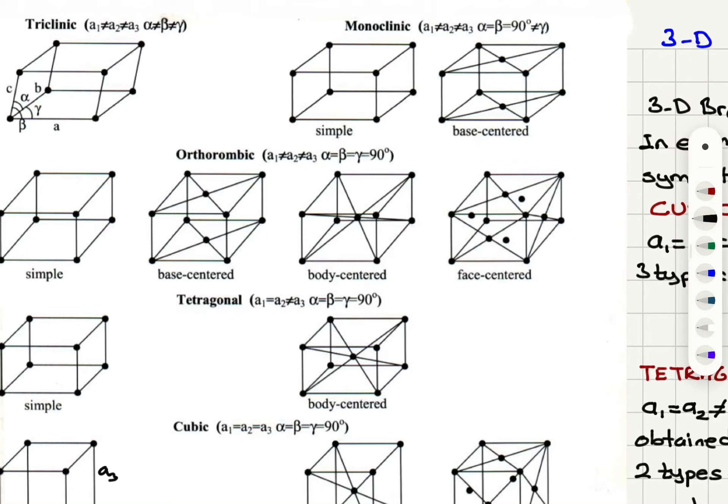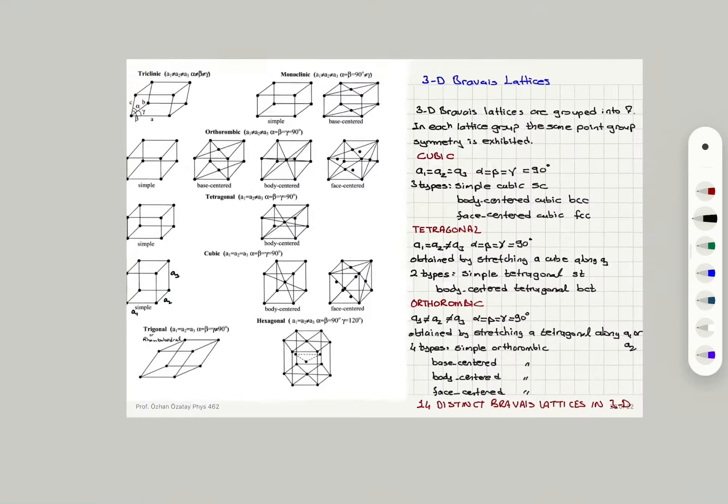Simple orthorhombic has all points at the corners. Base-centered has two points at the base centers. Body-centered has one point at the body center. And face-centered has additional points at the face centers.